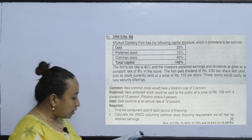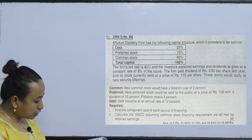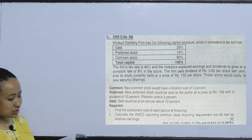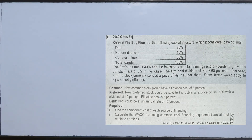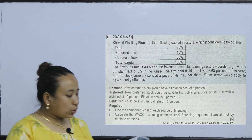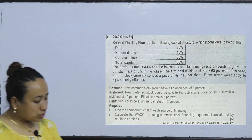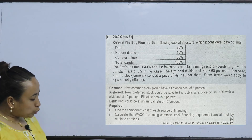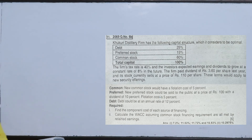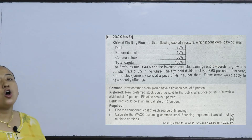This is another question. Kukuri Distillery Firm has the following capital structure, which it considers to be optimal: Debt 25%, Preferred Stock 15%, Common Stock 60%.